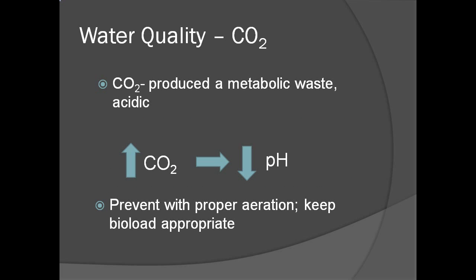Carbon dioxide is the other important dissolved gas that can affect amphibians. The gas is produced as a metabolic waste. The compound is acidic, so as it accumulates in the water, the pH decreases. Proper aeration of the water helps keep CO2 levels down. In tanks where water flow is low or aeration is poor, it is also important to keep the bioload appropriate to the size of the tank, as too many animals in too small a tank can lead to increased CO2 and an acidic environment.